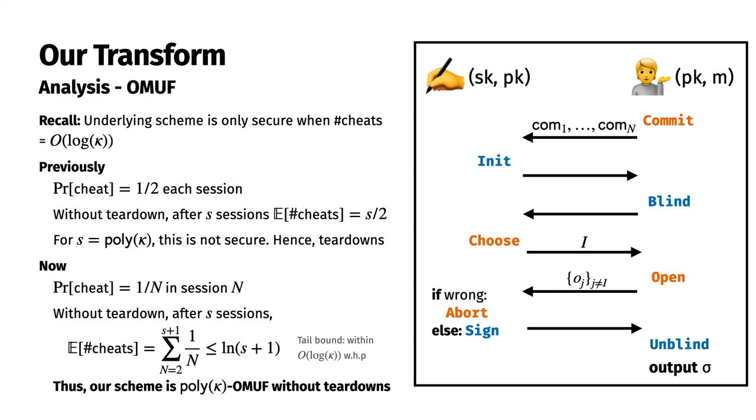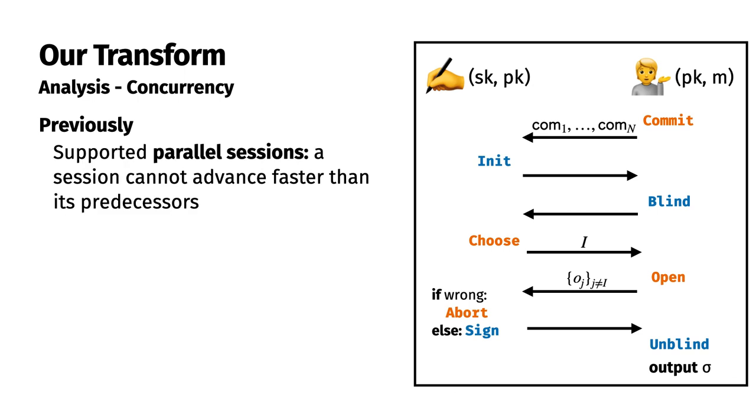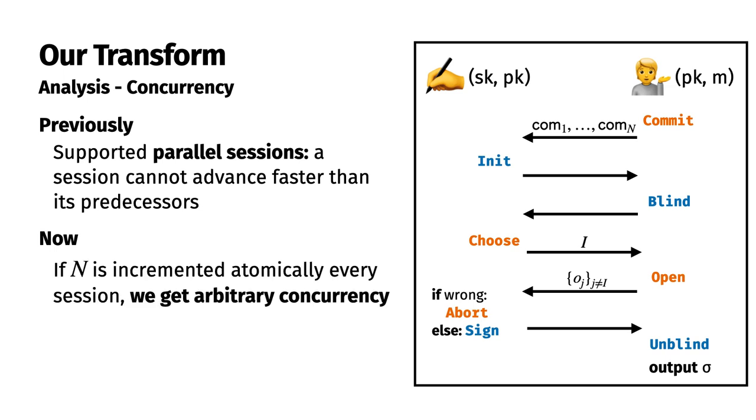We now compare concurrency. Recall that the Poincheval transform only permitted parallel executions, which is weaker than arbitrary concurrency. In particular, with parallel execution, a session cannot advance faster than its predecessors. With our scheme, the only state is the session number n. So if n is atomically incremented across sessions, the harmonic sum from the previous slide holds, regardless of the number of concurrent sessions running. Thus, we achieve arbitrary concurrency.